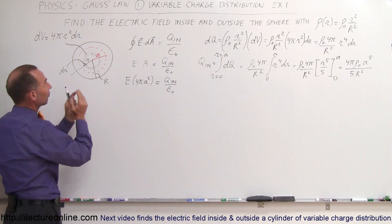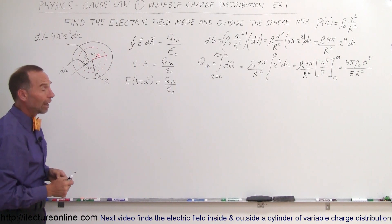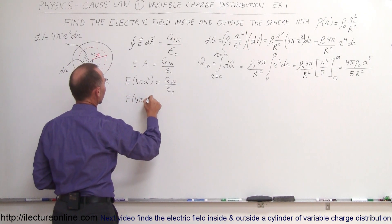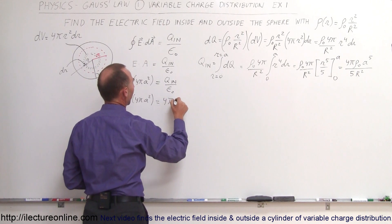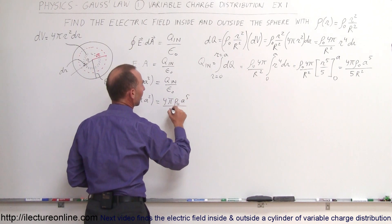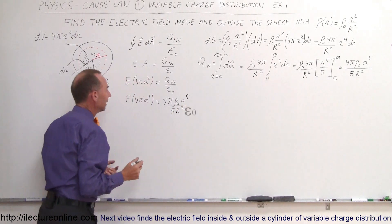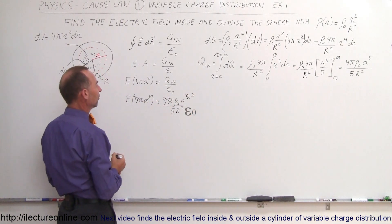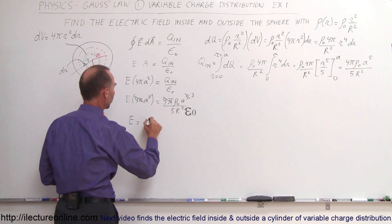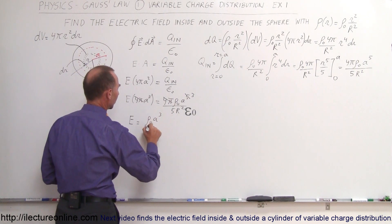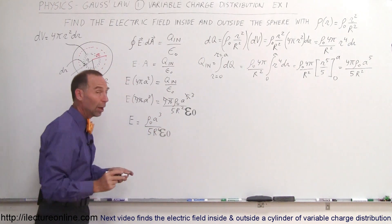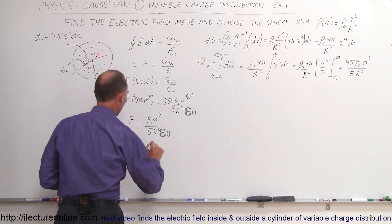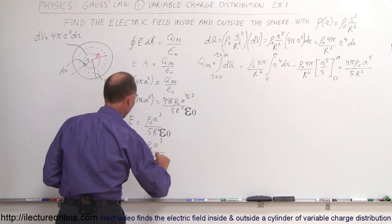Now we complete the problem. We write E times 4πA² equals Q_inside, which is 4πρ₀A⁵ divided by 5R², all divided by ε₀. The 4π's cancel. A² reduces A⁵ to A³. So the magnitude of the electric field is ρ₀A³ divided by 5R²ε₀. Writing that in vector format, E as a function of r equals ρ₀r³ divided by 5R²ε₀ in the radial direction. That is the electric field anywhere inside the sphere.